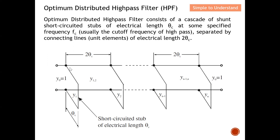There are two main elements. The first is the shunt short circuit stub. The second is what we call the connecting line — it connects the shunt short circuit stubs together. As you can see here, one short circuit stub and another short circuit stub are connected by this connecting line. This connecting line has double the electrical length compared to the short circuit stub. This is a simple description of the optimum distributed high pass filter and how it looks in schematic form. Later I'll show you step by step how to calculate the impedance values.